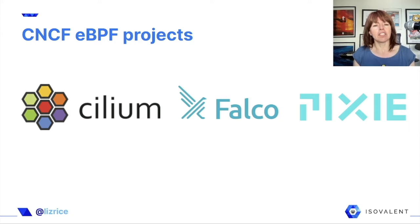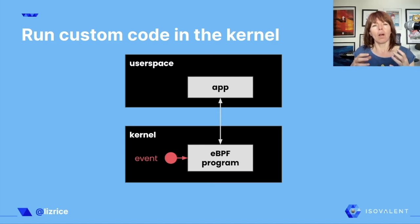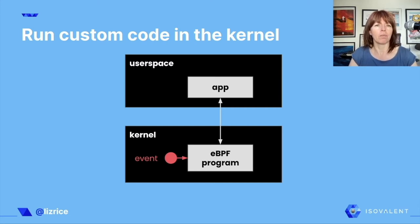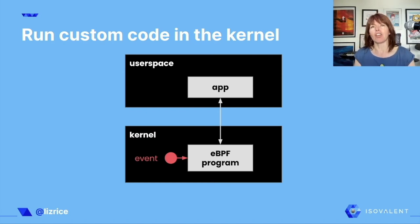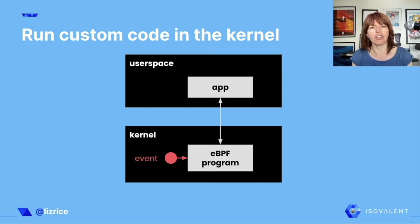Before we do that, let's understand what we mean by eBPF programs. User space applications can load eBPF programs into the kernel dynamically as and when required. We also have to attach those eBPF programs to an event — when that event happens, it triggers the associated eBPF program. What kind of events? It could be the arrival of a network packet, a user space application making a system call, or hitting a particular trace point or dedicated hooks within the kernel.